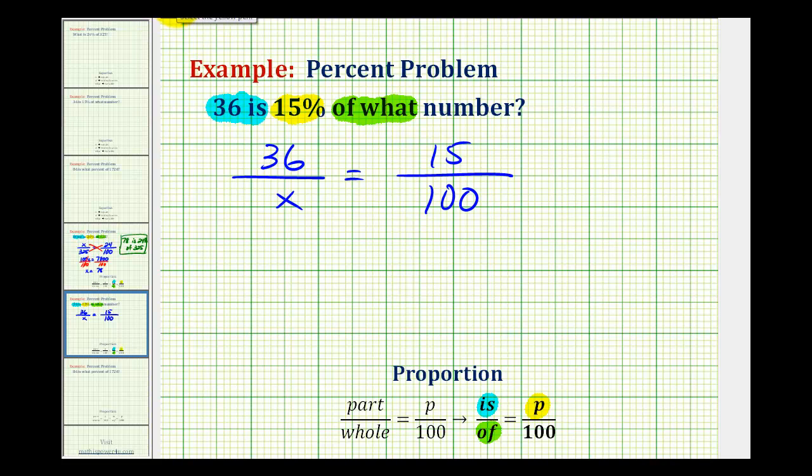Now we cross multiply and solve for x. So 15 times x must equal 36 times 100. So 15x equals 3,600.